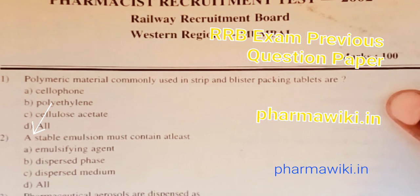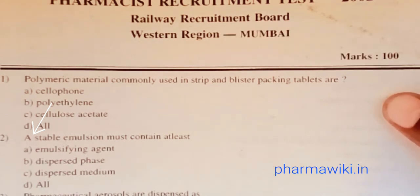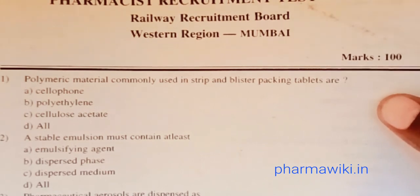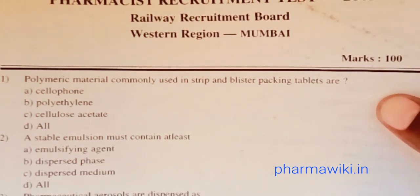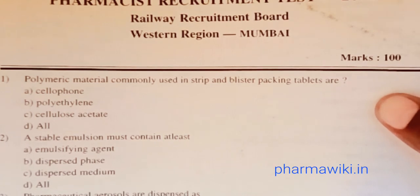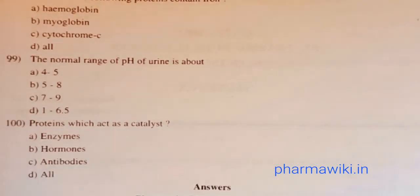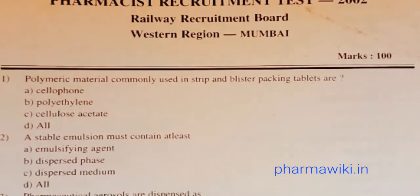Question 4: Membrane filters are made from — options include polyethylene, polypropylene, cellulose and its esters, or none. The answer is C, cellulose and its esters. Membrane filters are made from cellulose and its esters.